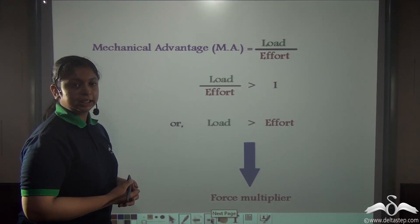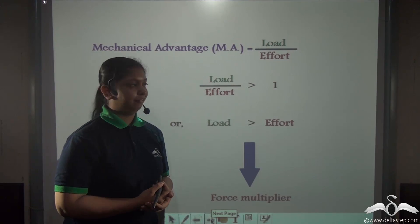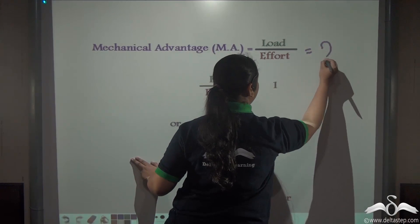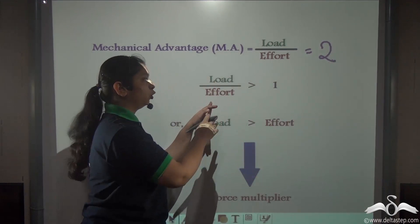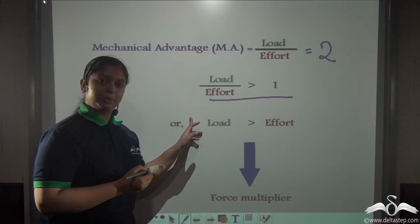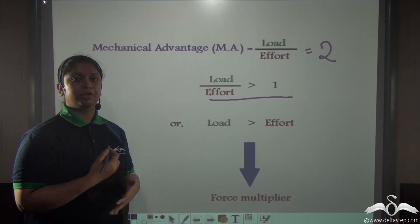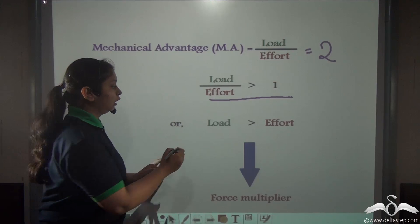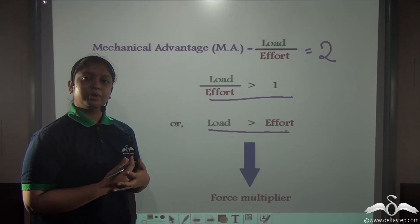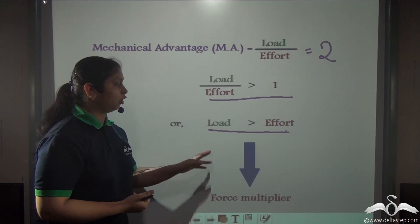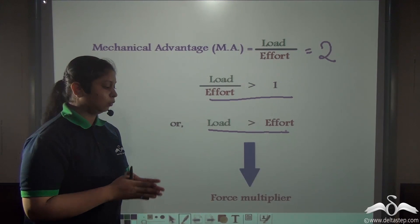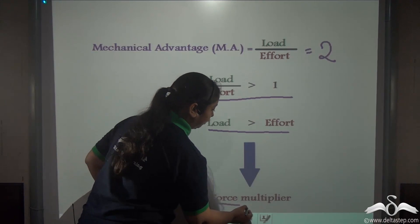Since mechanical advantage equals load divided by effort and we found that mechanical advantage equals 2, the load is greater than the effort. This means you need to apply a smaller effort to lift a heavier load. Therefore, a movable pulley is a simple machine which acts like a force multiplier.